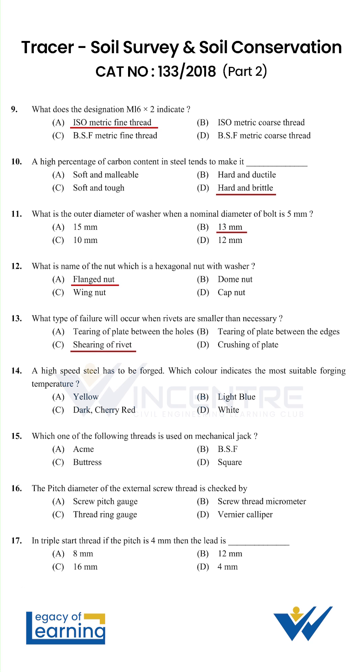A high speed steel has to be forged. Which color indicates the most suitable forging temperature? Option A: yellow.